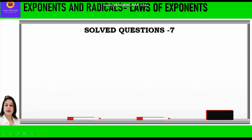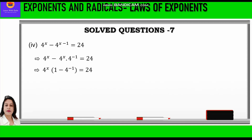Now let's take up question number 4. It is given 4 raised to power x minus 4 raised to power x minus 1 is equal to 24. Since 4 raised to power x minus 1 is a sum of two exponents, we can split it as 4 raised to power x into 4 raised to power minus 1. So we write 4 raised to power x minus 4 raised to power x into 4 raised to power minus 1 is equal to 24. Taking 4 raised to power x common: 1 minus 4 raised to power minus 1 is equal to 24.